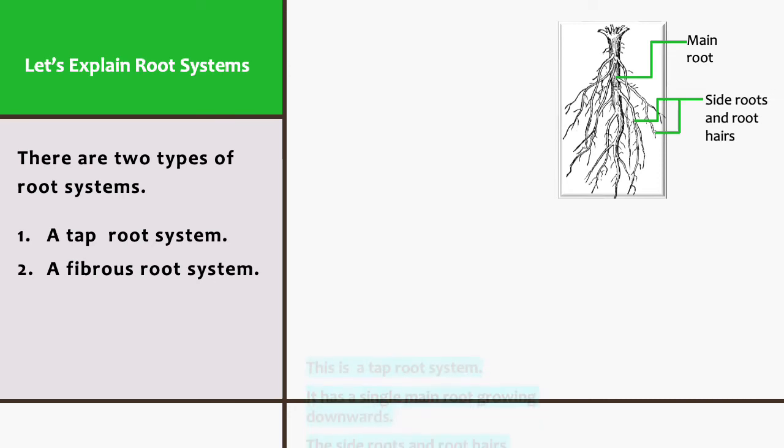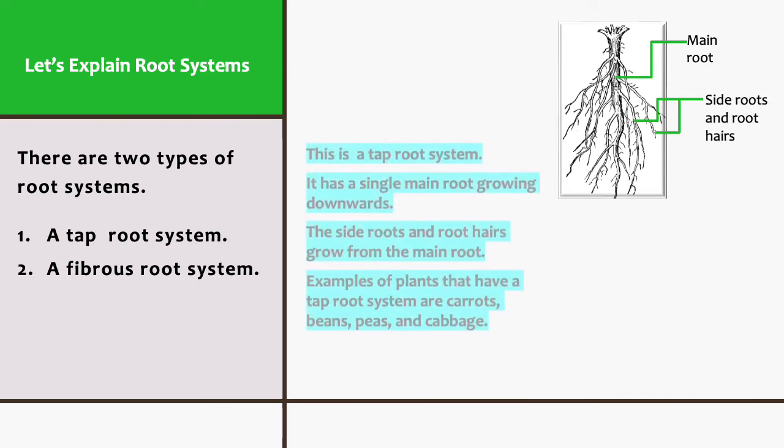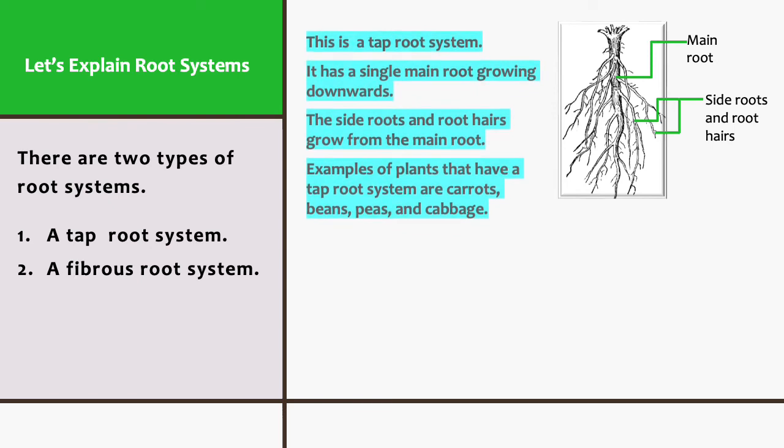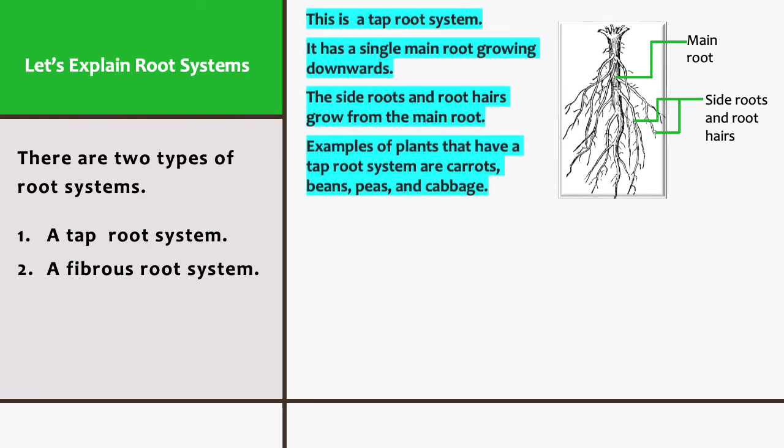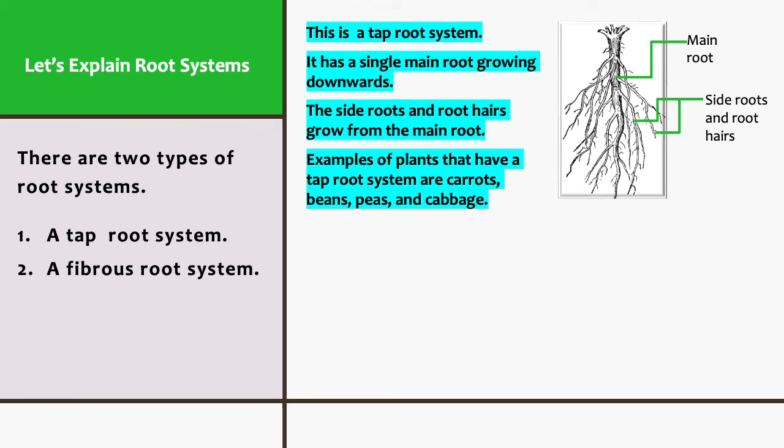This is a tap root system. It has a single main root growing downwards. The side roots and root hairs grow from the main root. Examples of plants that have a tap root system are carrots, beans, peas, and cabbage.